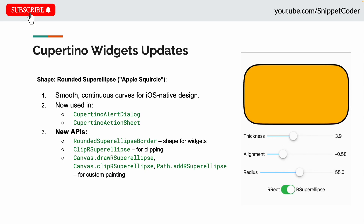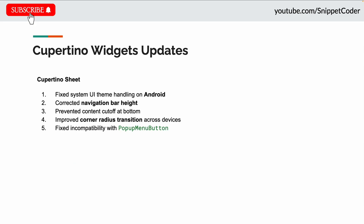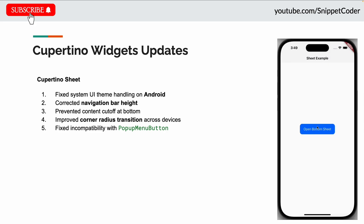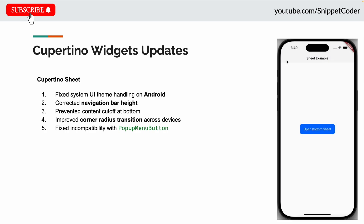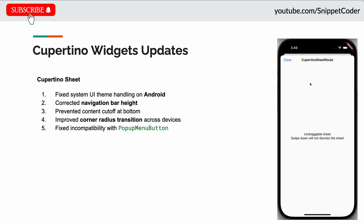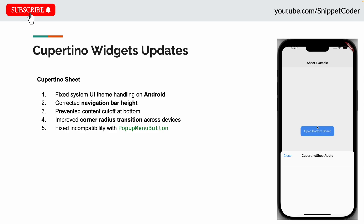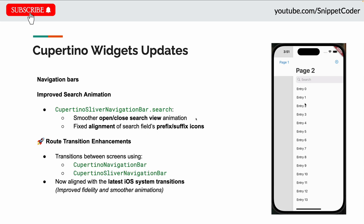Flutter fixed several issues with the Cupertino bottom sheet. It now correctly handles system UI themes on Android and has proper navigation bar height, avoiding cutting off content at the bottom. It also improves corner radius and transitions across devices, and is now compatible with the popup menu button, making it more reliable across layouts.